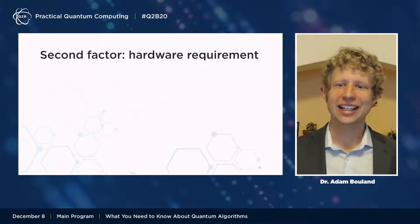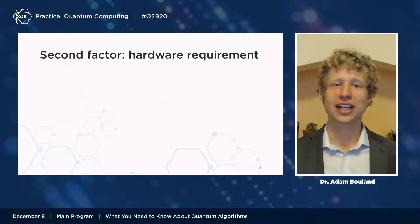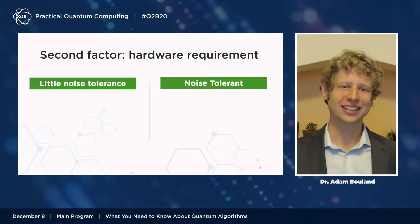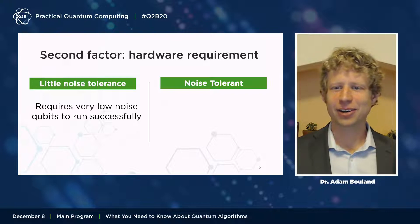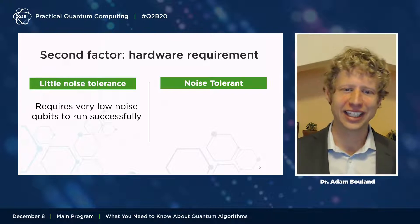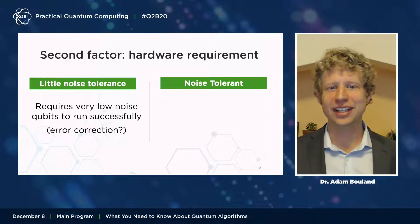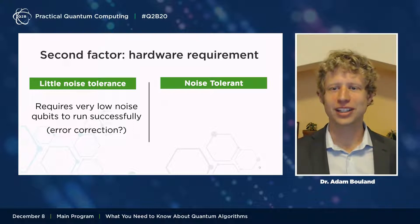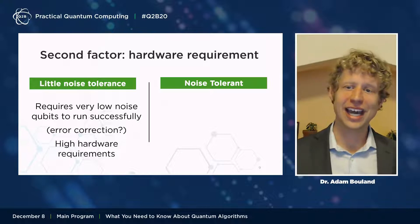The second factor you need to keep in mind is the hardware requirements for running the algorithm, which determines exactly when a quantum algorithm will become relevant to your application. The controlling factor here is how noise tolerant the algorithm is. Current prototype quantum computers are highly noisy, and certain algorithms really cannot tolerate this noise — they require very low noise, very high quality qubits to run successfully, far higher quality than we have today. It appears we may need to implement quantum error correction to run these algorithms, which incurs very high overheads in terms of number of qubits and clock speeds.